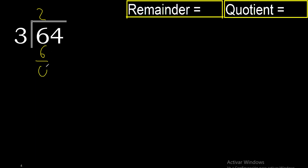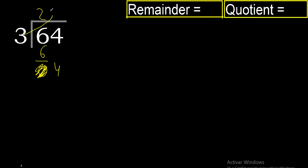6 minus 6 is 0. Bring down 4, so now we work with 4. 3 multiplied by 2 is 6 — excessive. 3 multiplied by 1 is 3. 4 minus 3 is 1.